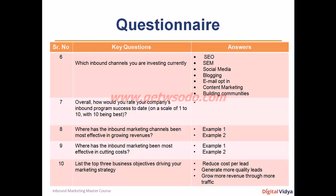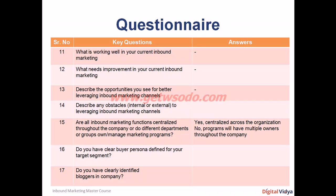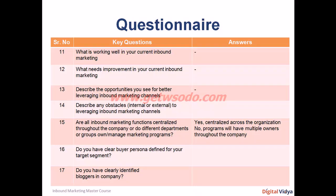Questions 11 through 14 cover SWOT analysis: what is working well in your organization, what needs improvement, what opportunities exist to better leverage inbound marketing, and what are the obstacles? Question 15: are inbound marketing functions centralized or decentralized? This is very important — many organizations have different marketing departments aligned to different brands or units, but a customer sees the organization as a single entity. Different departments sending different emails can cause problems, so you need to know whether it's a centralized or decentralized operation.